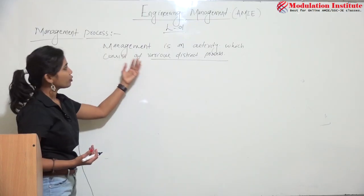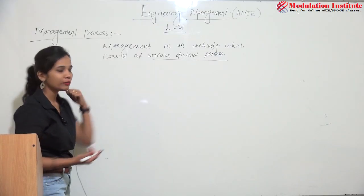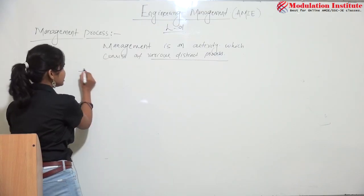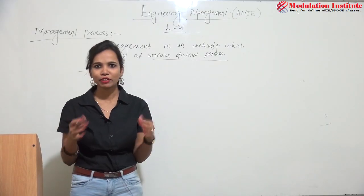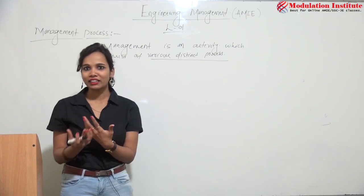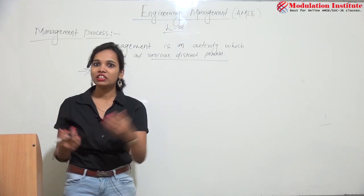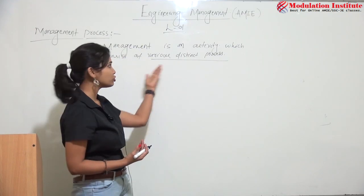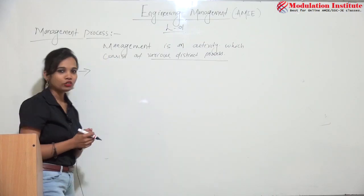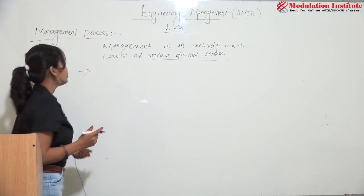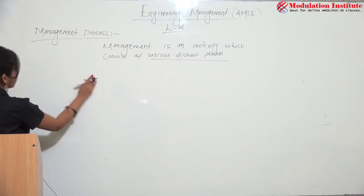The important point is: if we have not followed the process, what will happen? It is very simple — you cannot achieve the goal if you are not going through the proper process. So let us move forward to understand the characteristics of management.